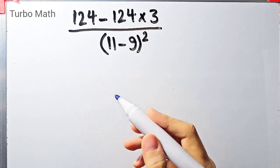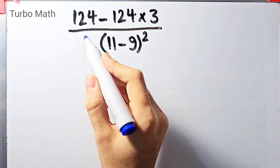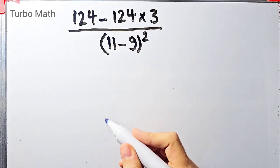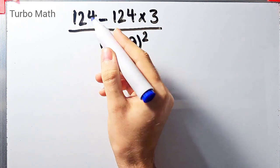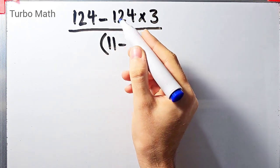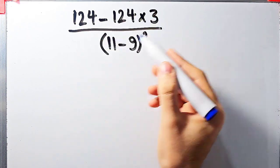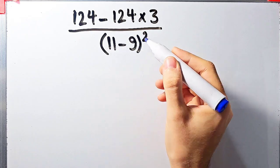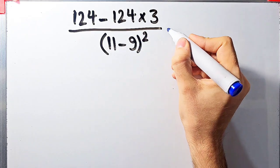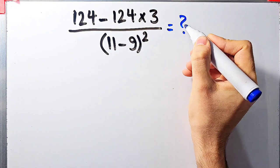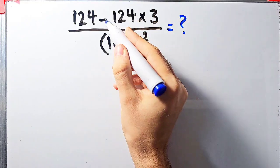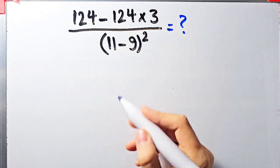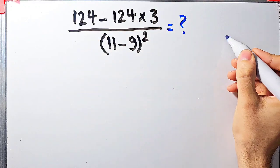Hi friends, welcome to Turbo Math channel. Many people when they see this question don't know which operation to do first, so they often make a mistake. The question is: 124 minus 124 times 3, divided by open parentheses 11 minus 9 close parentheses, all to the power of 2. What is the answer?